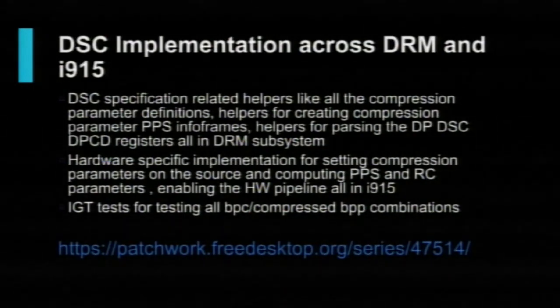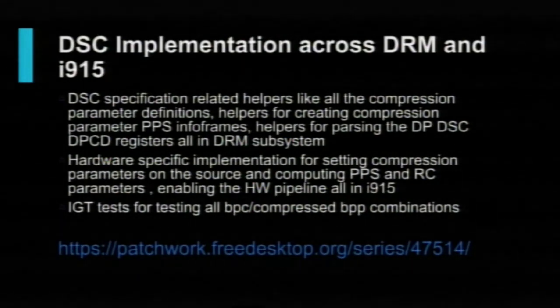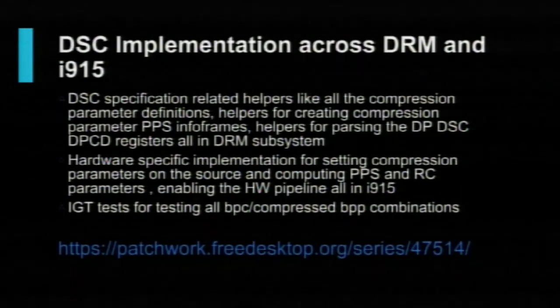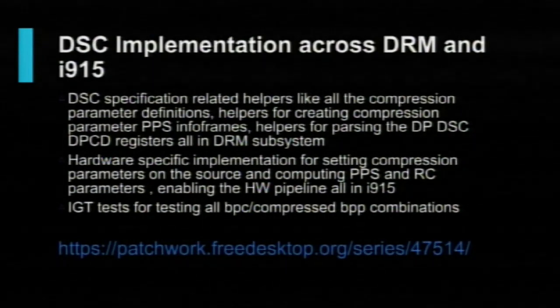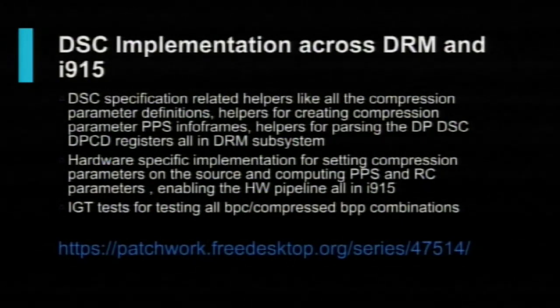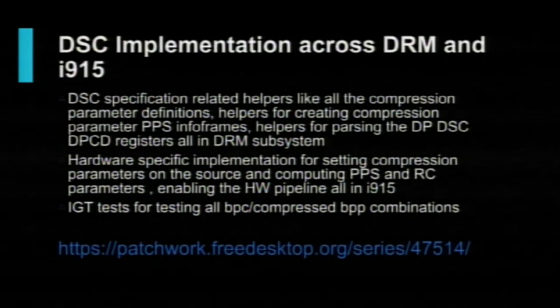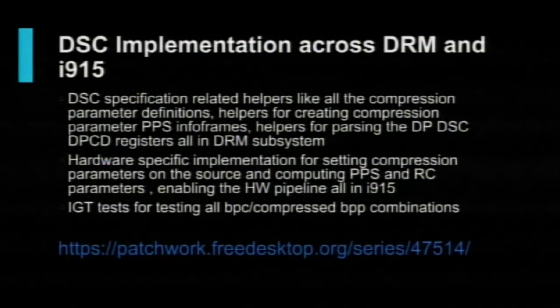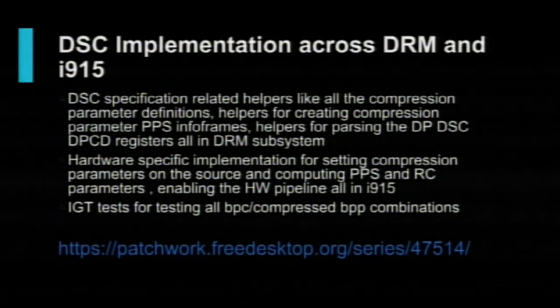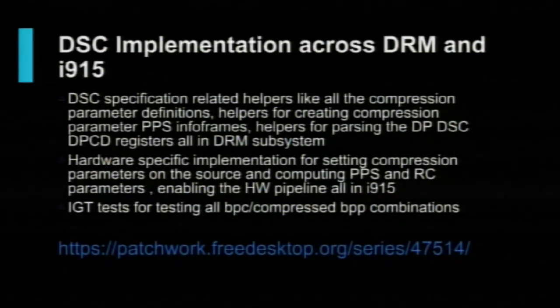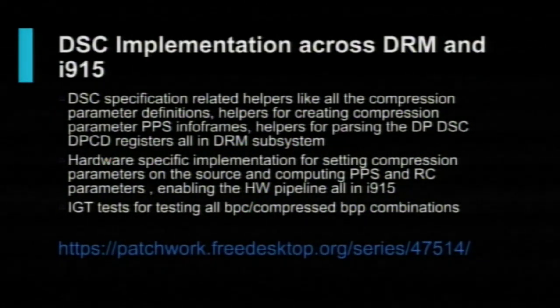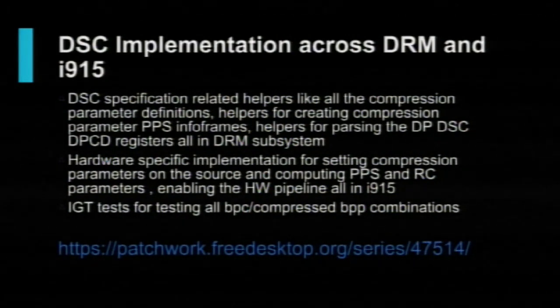Here's a summary of how DSC is implemented across DRM and i915. Since most of this implementation is DSC-spec-related, there's a common set of helpers that parse the DSC DPCD registers, get all the DSC parameters, and form the encoding parameters to be sent to the sink — all sitting in the DRM layer so it can be shared across other vendor-specific drivers. We also have i915 hardware-specific implementation. IGT tests are still being worked on and not yet submitted to the mailing list. I need your help reviewing the patches on the mailing list for both the DRM and i915 implementations.